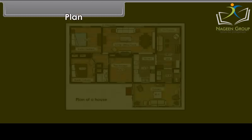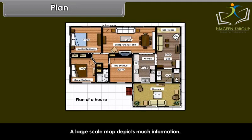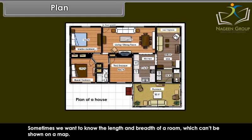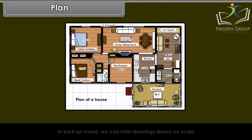A plan is a drawing of a small area on a large scale. A large scale map depicts much information. Sometimes we want to know the length and breadth of a room which can't be shown on a map. In such an event, we can refer to drawings drawn on scale. It is known as a plan.